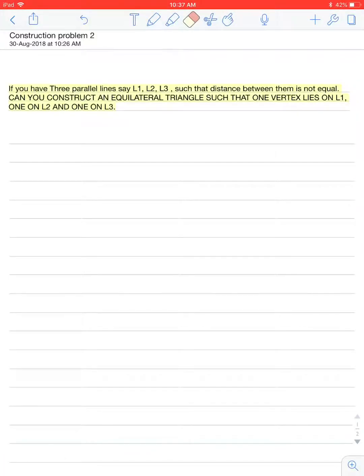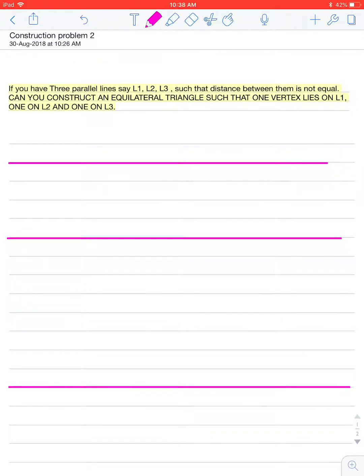Hello friends, today's problem is: if you have three parallel lines, say L1, L2 and L3, such that the distance between them is not equal, that is you may have L1, L2 and L3 lines there, such that distance between them is not equal.